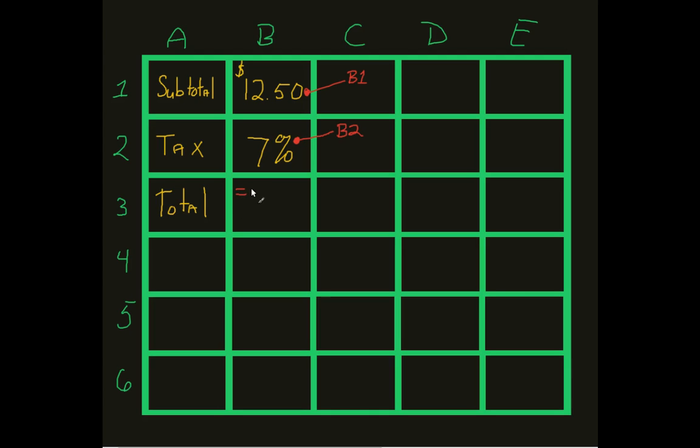So the first thing is I have to put in my subtotal, B1. The reason why is because obviously I apply the tax to the subtotal and then I add whatever that is to my subtotal. I wish it was just whatever the tax times subtotal was, but that's unfortunately not how the world works.